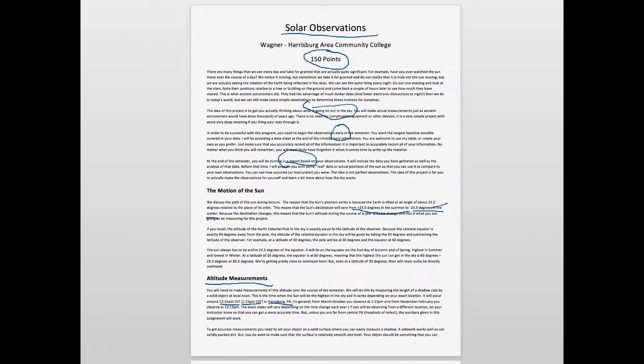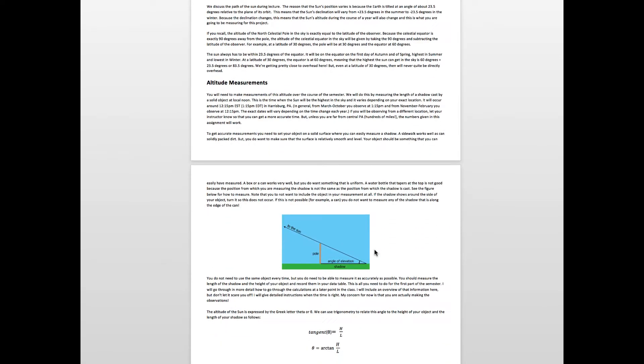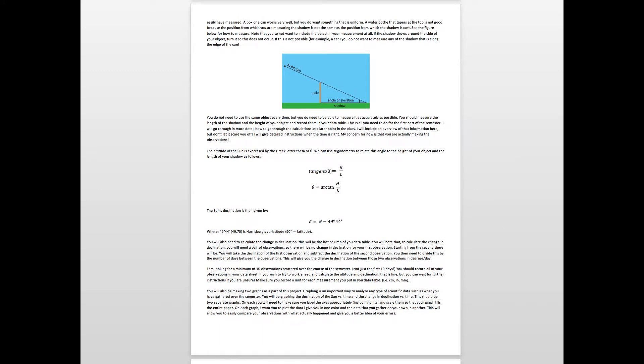What you're going to do is measure the length of the shadow an object casts. A very good hard solid surface is suggested. You don't want to measure on a grassy surface or very soft dirt where it's difficult to get accurate measurements. The type of object you want to use is something you can measure easily - a box or a can work very well.